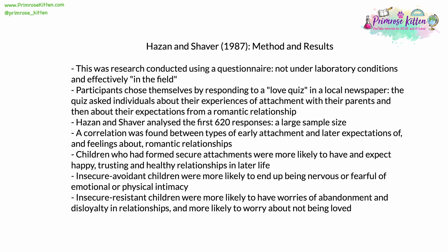Participants chose themselves by responding to a love quiz in a local newspaper. The quiz asked individuals about two things: firstly, their experiences of attachment with their parents; and secondly, about their expectations from a romantic relationship or partnership. Hazen and Shaver analyzed the first 620 responses — a large sample size, much larger than sample sizes we're used to seeing in psychology. They found a correlation between types of early attachment and later expectations of and feelings about romantic relationships.